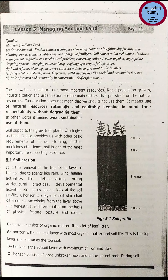Soil supports the growth of plants which give us food. It also provides us with other basic requirements of life — clothing, shelter, medicines, etc. Hence, soil is one of the most important life-supporting resources. Soil erosion is the removal of the top soil, which is the fertile layer of the soil, due to agents like rain, wind, and human activities like deforestation, wrong agricultural practices, developmental activities, etc.